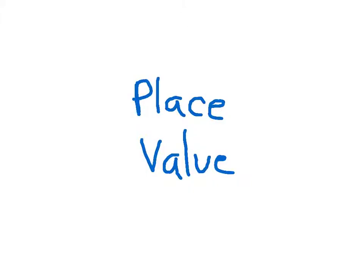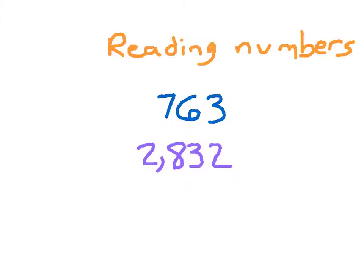Let's go ahead and work with place value. Let's start with reading numbers. So when we look at this number right here, this is 763. This number right here is 2,832. As the numbers continue to get larger, we can concentrate on reading the periods of the numbers as well.